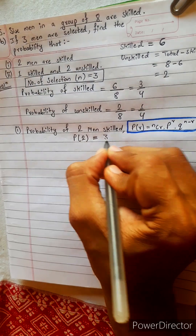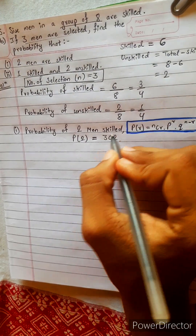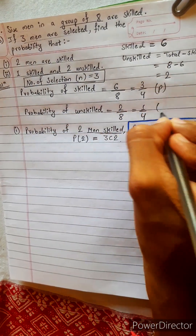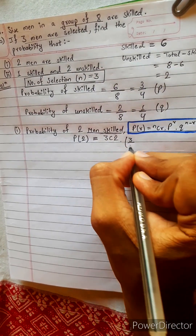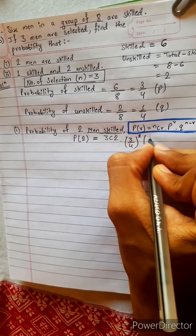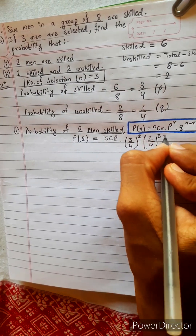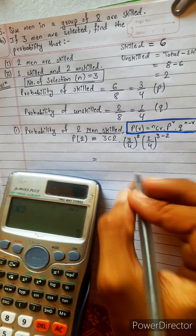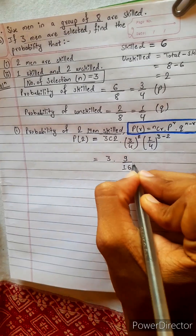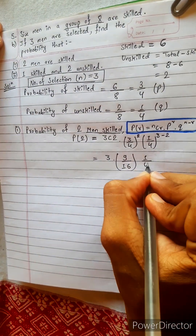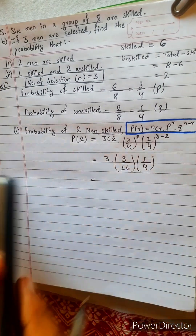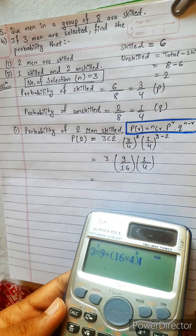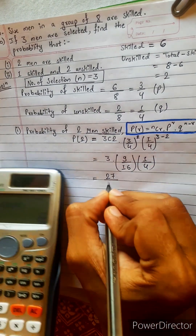Using this formula with N equals three, R equals two, and P equals three by four — since we are focusing on skilled. So three by four to the power R, which is two. Q equals one by four to the power N minus R, which is three minus two equals one. Three C2 is three. Three into nine by sixteen, and one by four to the power one is one by four itself. So nine divided by sixteen into four gives twenty-seven by sixty-four.